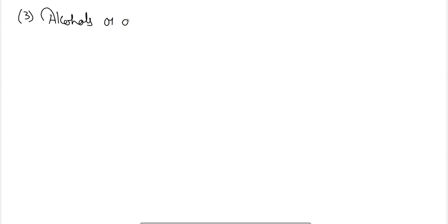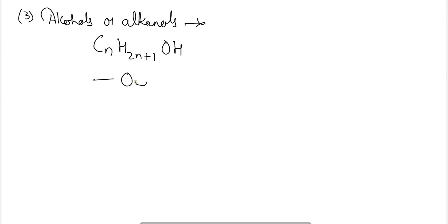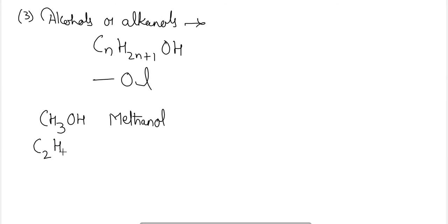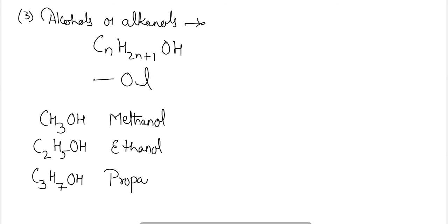Next are alcohols (alkanols). General formula: CnH2n+1OH. The suffix is -ol. Examples: CH3OH → methanol, C2H5OH → ethanol, C3H7OH → propanol, C4H9OH → butanol.